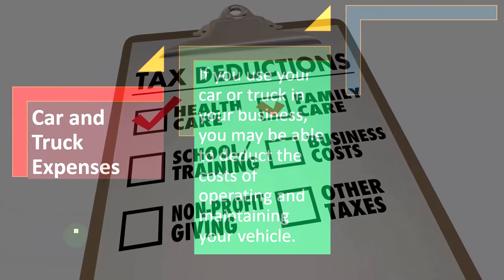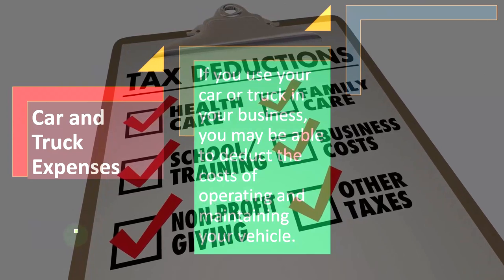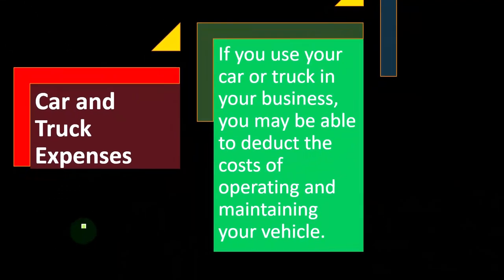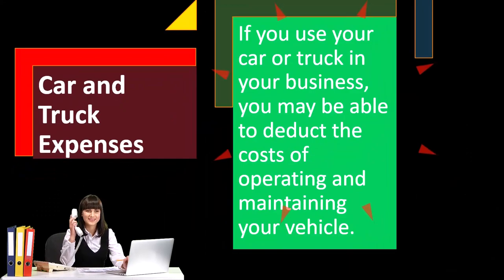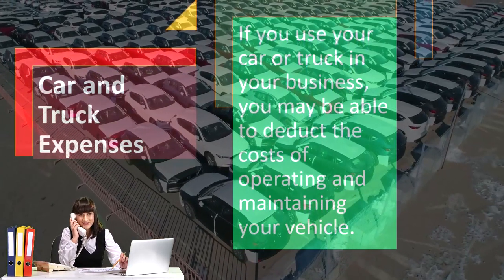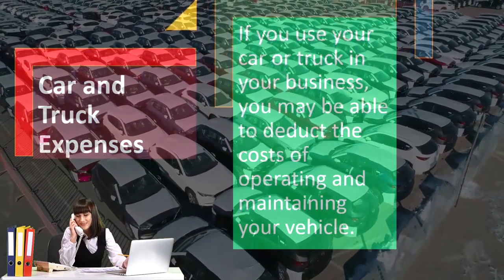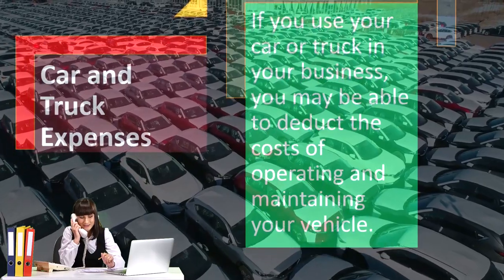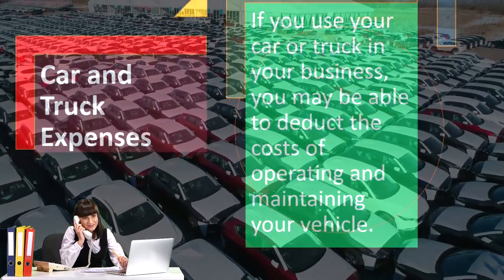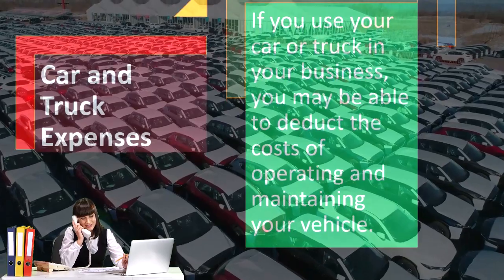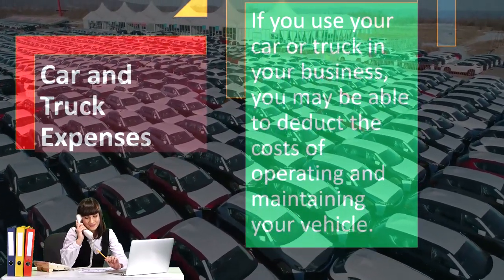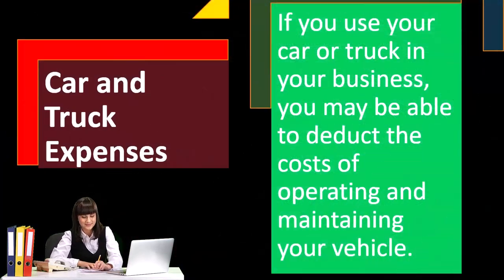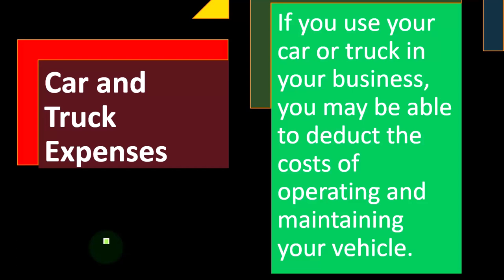There's a question of which method results in a greater deduction, and it's more complicated than you might think. We could consider the deduction for the current year versus the deduction over the entire life of the automobile used in the business. That leads to the question of whether choosing one method locks you into it permanently or whether you can switch methods. The general rule is that the IRS likes you to stick to a method once chosen, so you may have restrictions on switching between methods for tracking car and truck expenses.